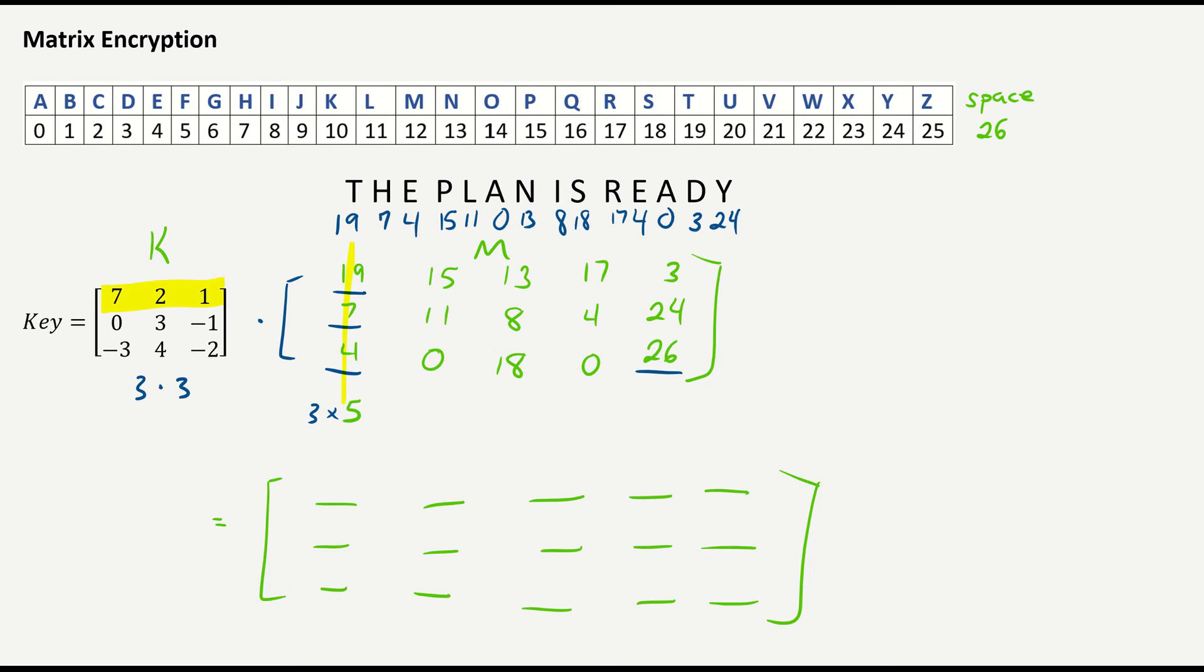So I go with 7 times 19, which is 133, plus 2 times 7, which is 14, and 1 times 4, which is 4. And then, so this is multiplication, which you can see how it adds to making this harder to decrypt.